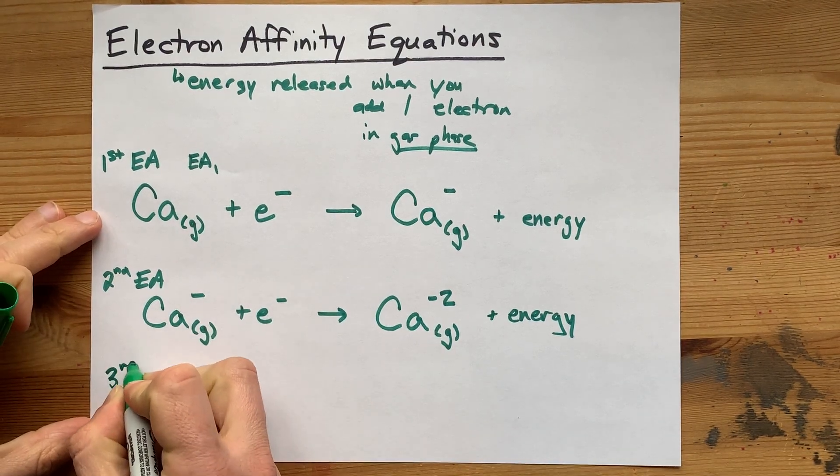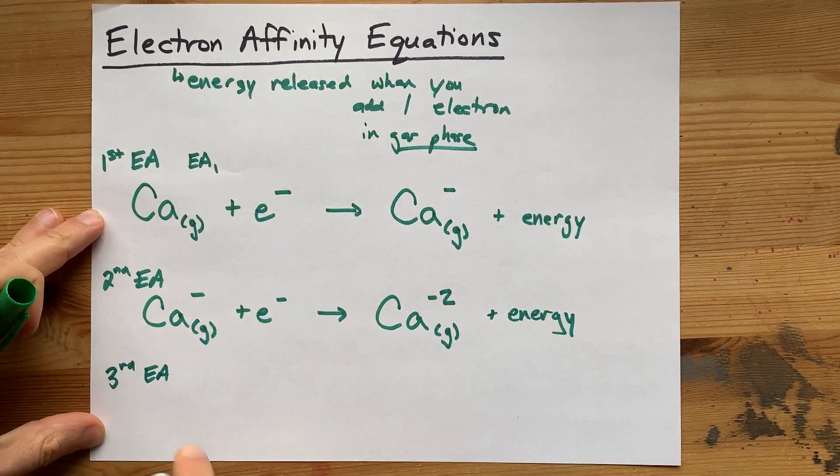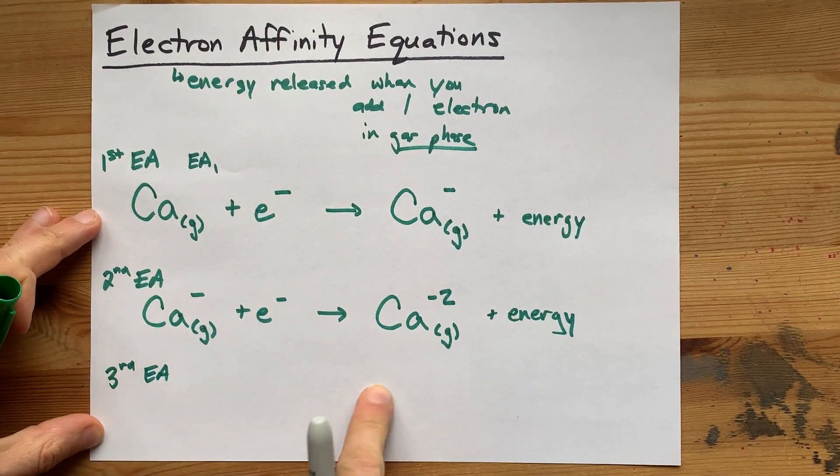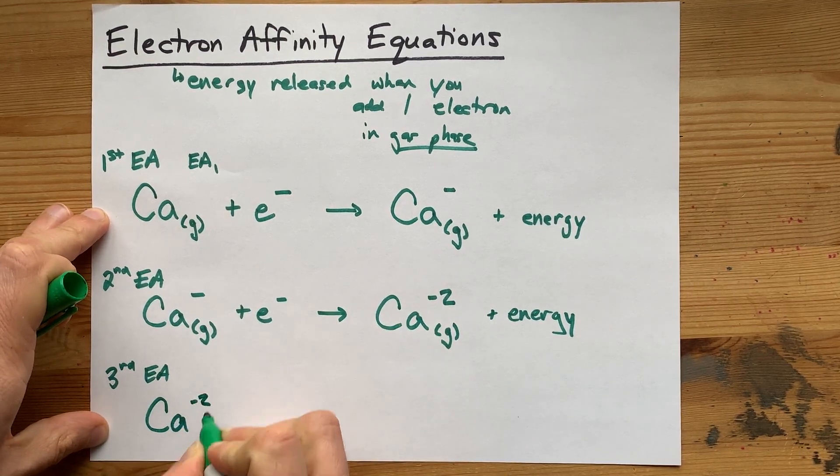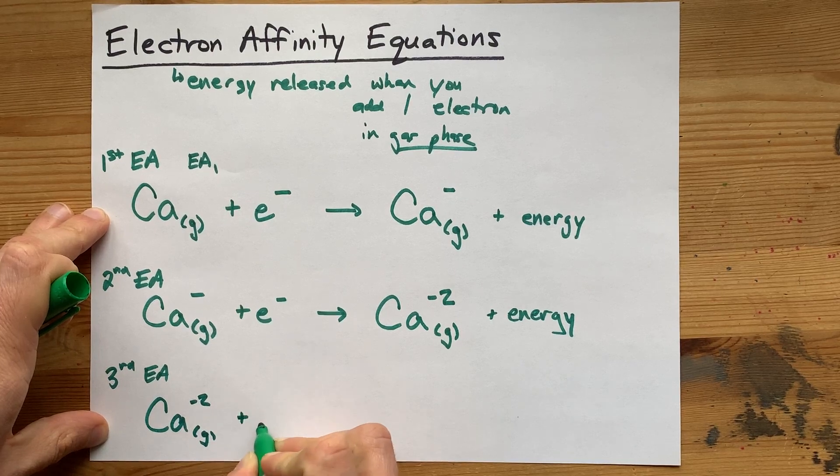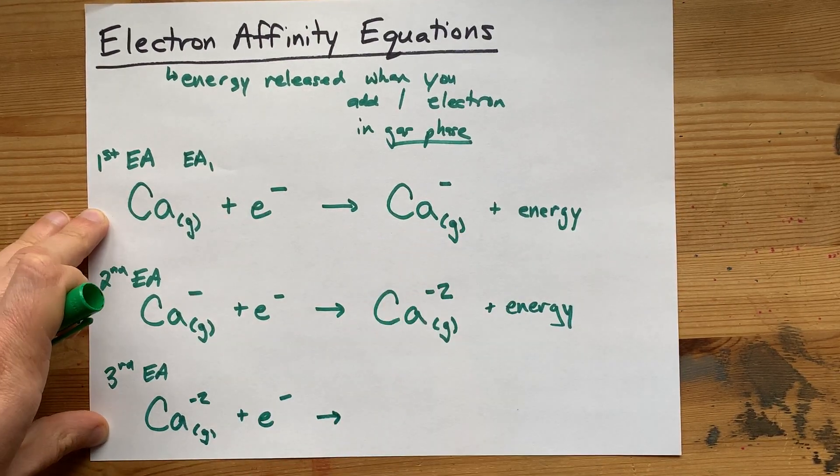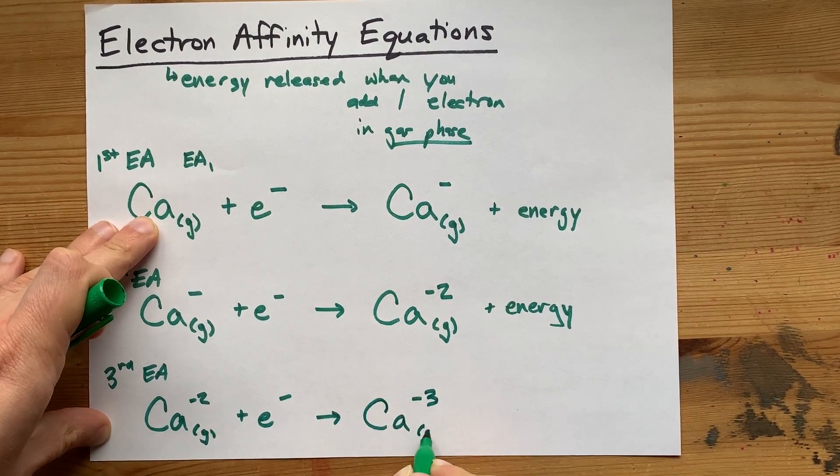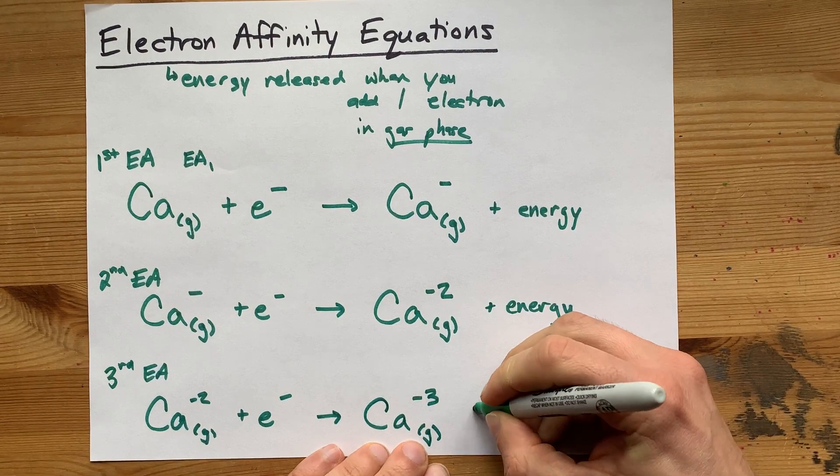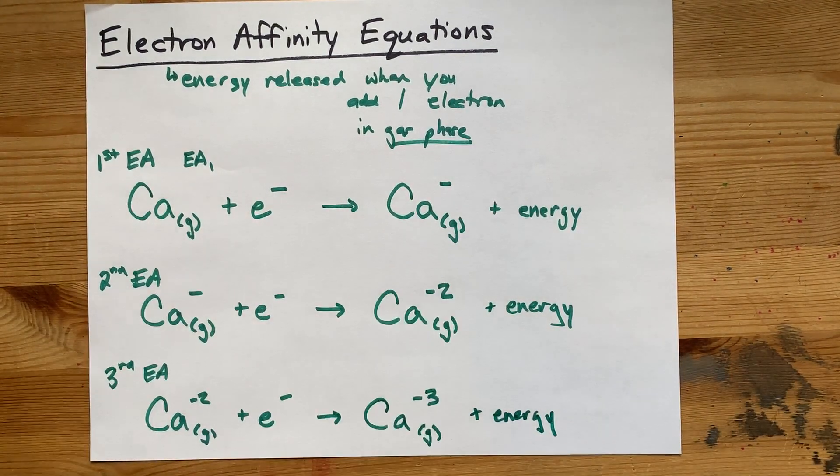Lastly, I'm going to continue. There is a third electron affinity, etc., but the third starts with the product of the second. Ca minus two in the gas phase. You could theoretically add another electron, a third electron, and get Ca with a minus three charge. I like it. Just for completeness here, I'm going to write plus energy. Done.